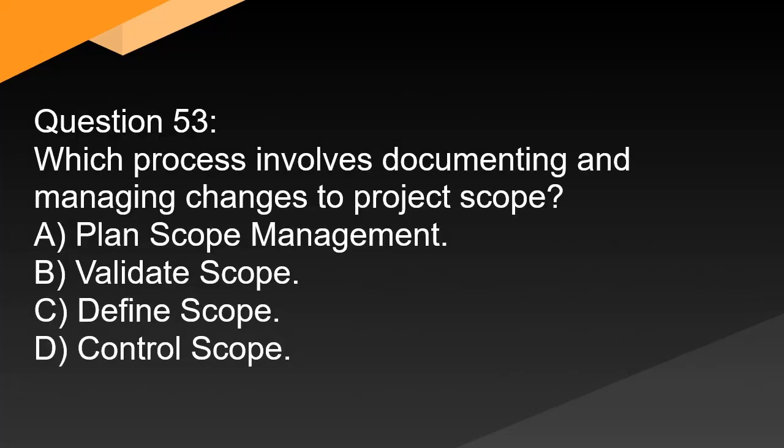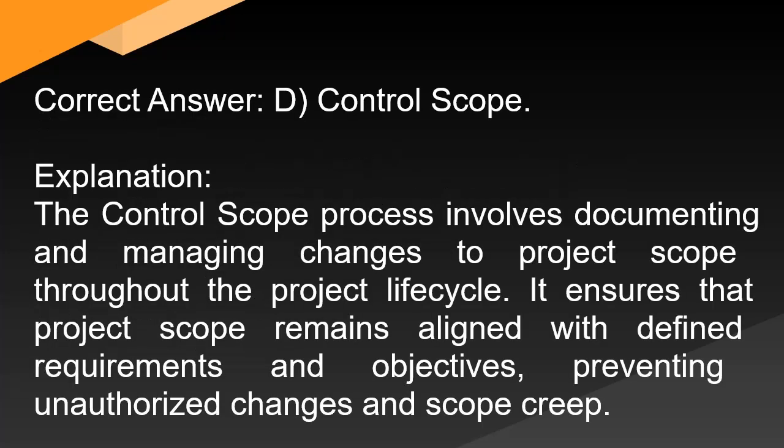Question 53: Which process involves documenting and managing changes to project scope? A. Plan scope management. B. Validate scope. C. Define scope. D. Control scope. Correct answer: D. Control scope. Explanation: The control scope process involves documenting and managing changes to project scope throughout the project lifecycle. It ensures that project scope remains aligned with defined requirements and objectives, preventing unauthorized changes and scope creep.